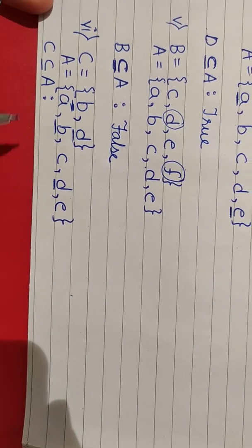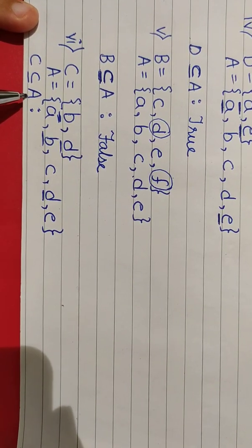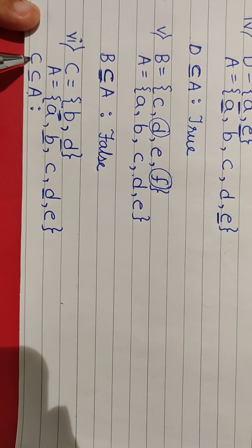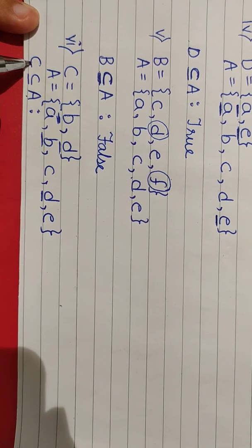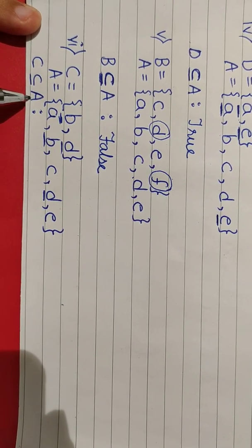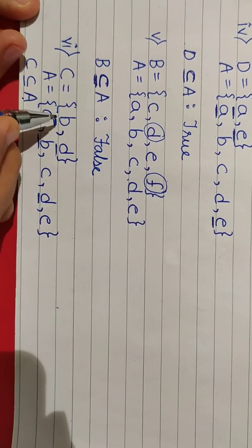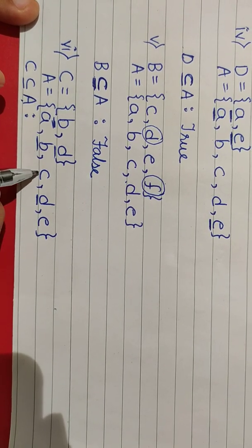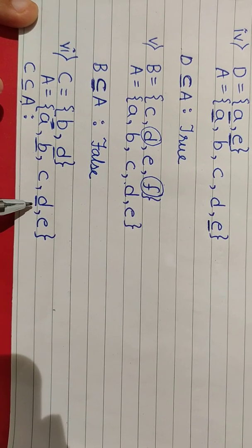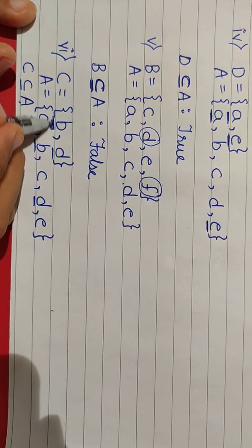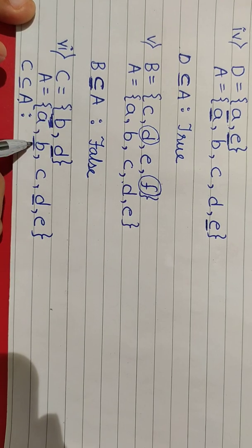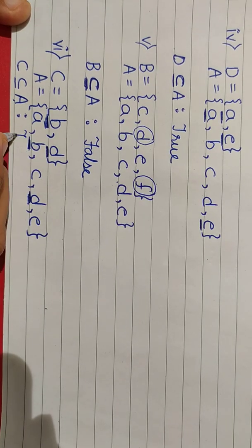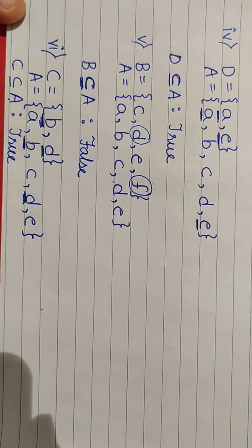Let's see the last example. Is C ⊆ A? To prove C is a subset of A, all the elements of set C should be present in set A. C = {B, D} and elements of A are A, B, C, D, E. In this example, we can see both elements of set C are present in set A also. Therefore, the statement C ⊆ A is true.